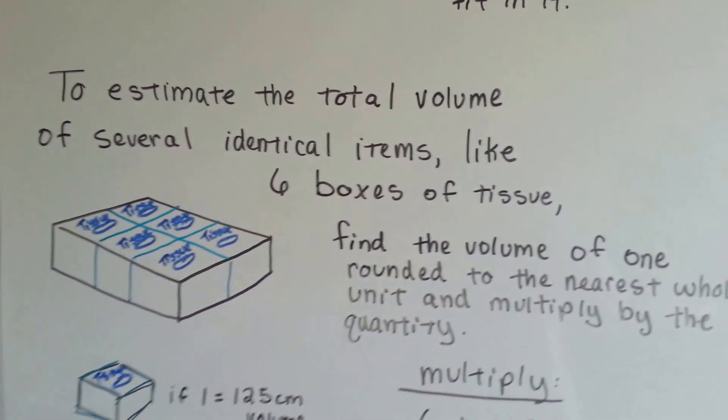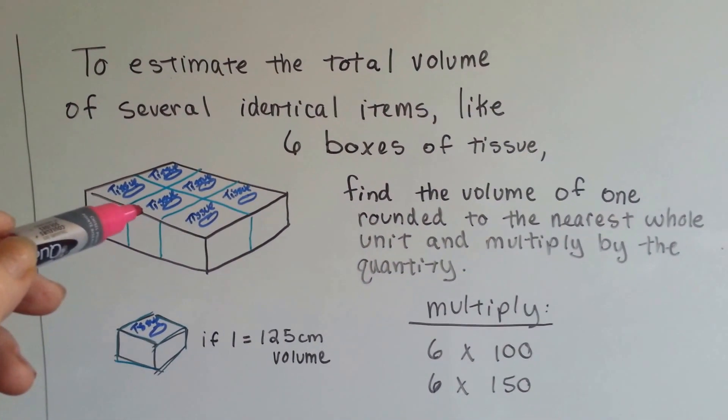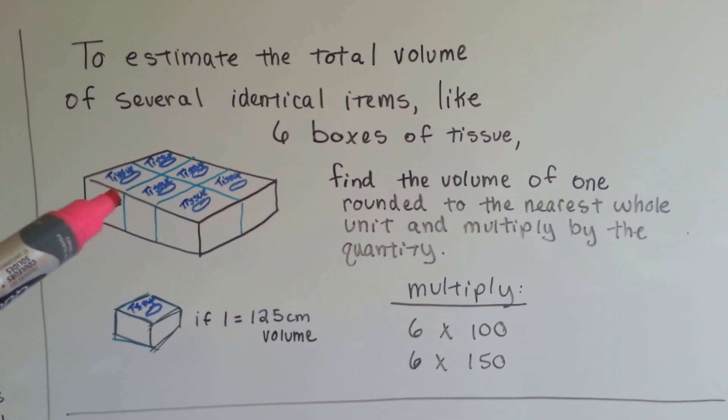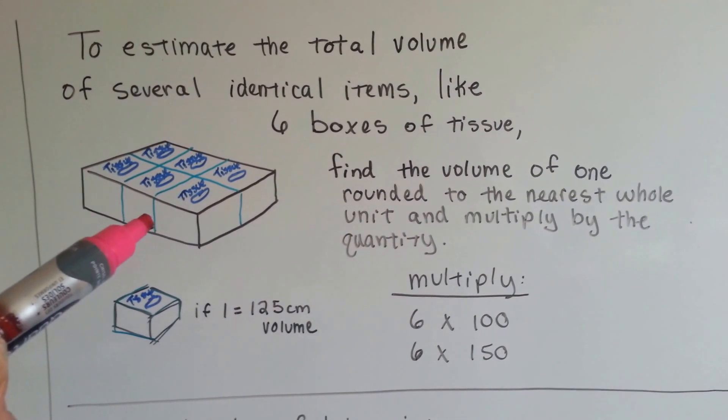To estimate the total volume of several identical items, like these six boxes of tissue, what you do is find the volume of one, rounded to the nearest whole unit, and then multiply it by the quantity.